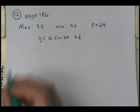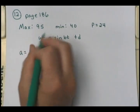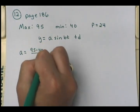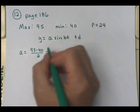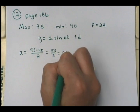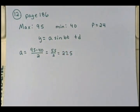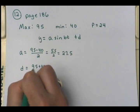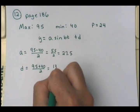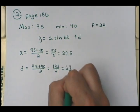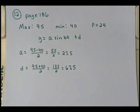I can automatically find my A: amplitude equals max minus min divided by 2, which is 95 minus 40 over 2, giving us 55 over 2, which is 27.5. To get our D — the vertical shift — we add 95 plus 40 over 2, which is 135 over 2, so the vertical shift is 67.5.